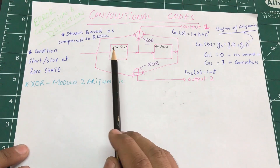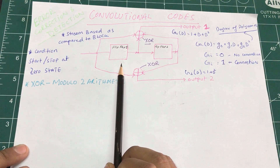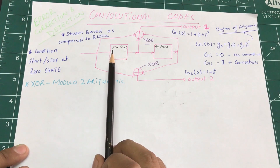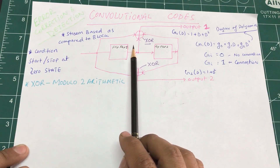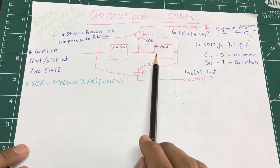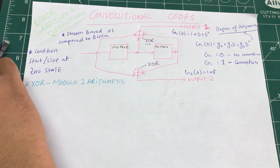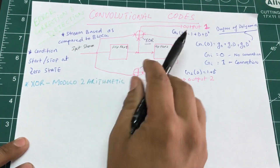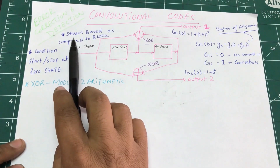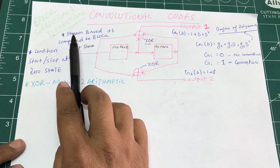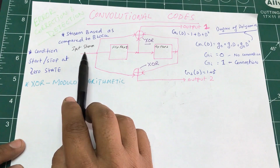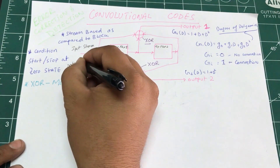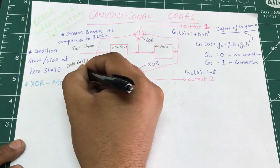There are multiple ways to implement convolutional codes. This one is a circuit-level diagram based on flip-flops. You can also implement it using state machines or a trellis diagram. We're going to use the flip-flop approach, where the data input stream is shifted through, and based on that we find the output. This is a stream-based scheme, not block-based — data comes in one bit at a time.